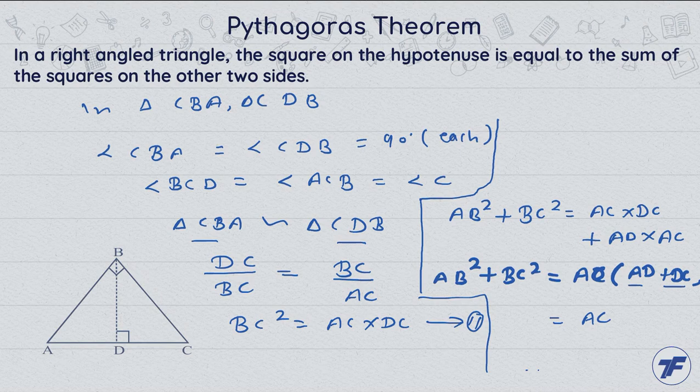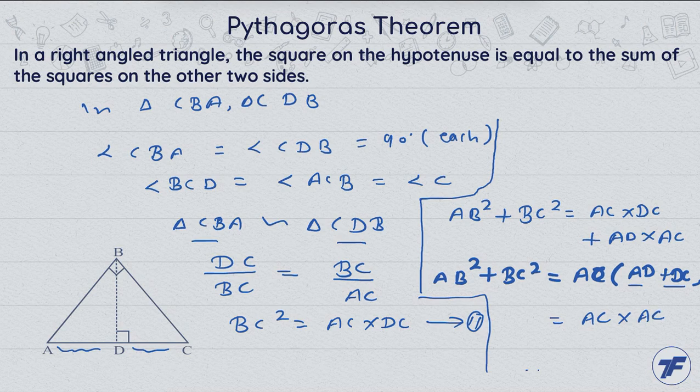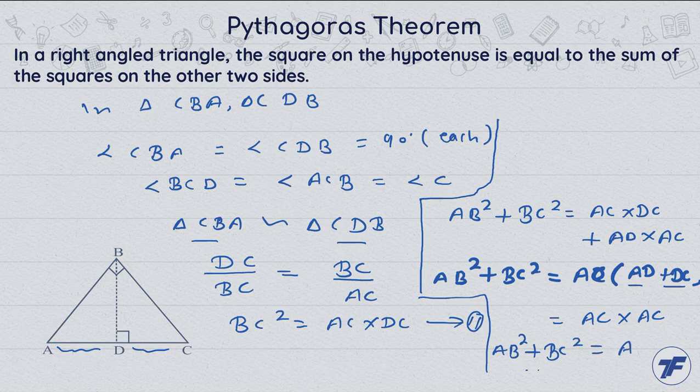Add them. AD plus DC is equal to AC. It means AB squared plus BC squared equal to AC squared.